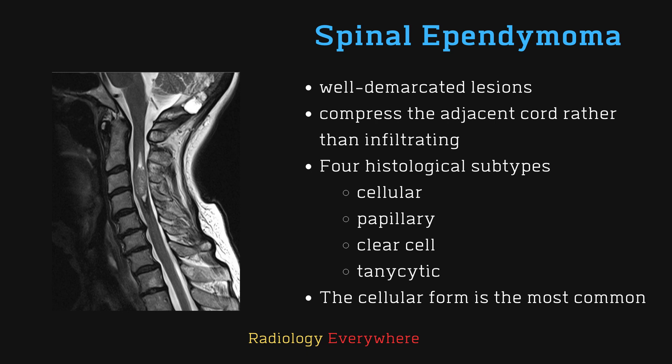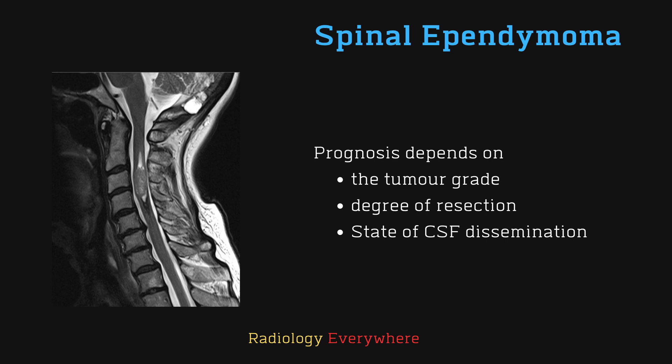These tumors are well demarcated and compress the adjacent cord rather than infiltrating it. We can see malignant histological subtypes including anaplastic ependymoma, which are WHO grade 3. There are four histological subtypes of CNS ependymomas: cellular, papillary, clear cell, and tanycytic. The cellular form is the most common intramedullary variant, and the prognosis depends on tumor grade, degree of resection, and CSF dissemination.